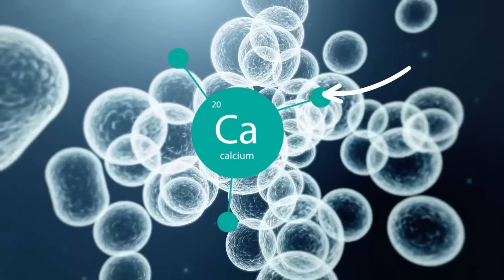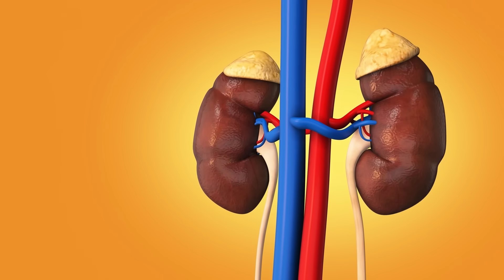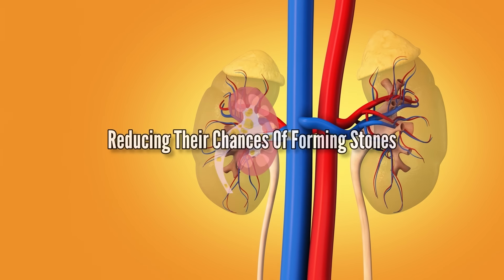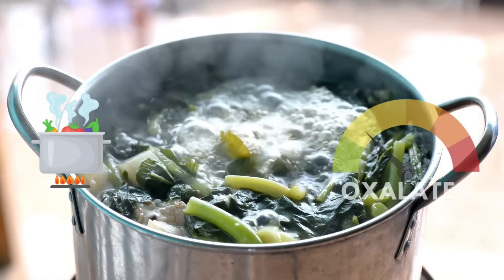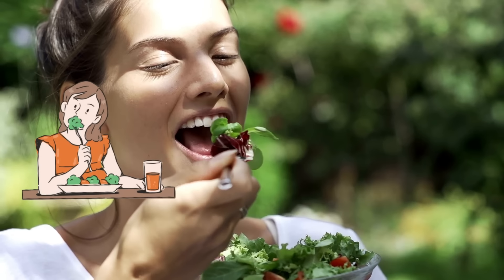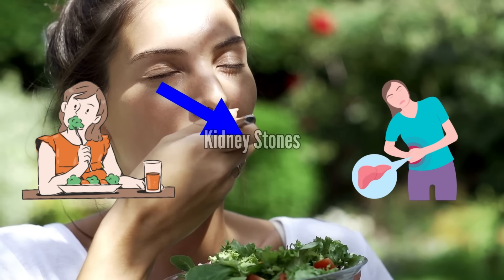Calcium has a tendency to bind with oxalates, making it easier for them to pass through the kidneys, reducing their chances of forming stones. Second, boiling veggies can actually help lower oxalates. So, eating boiled veggies can lower the chances of getting kidney stones.